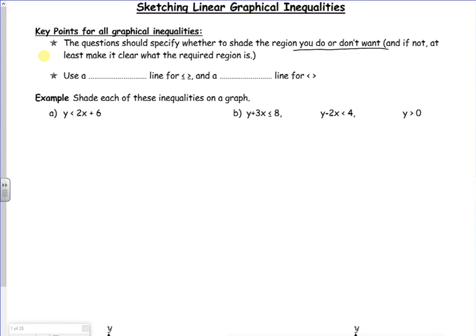Right, let's have a look. So if it's greater than or equal to, or less than or equal to, we draw it with a solid line. So if there's a set of axes, it would look like that.